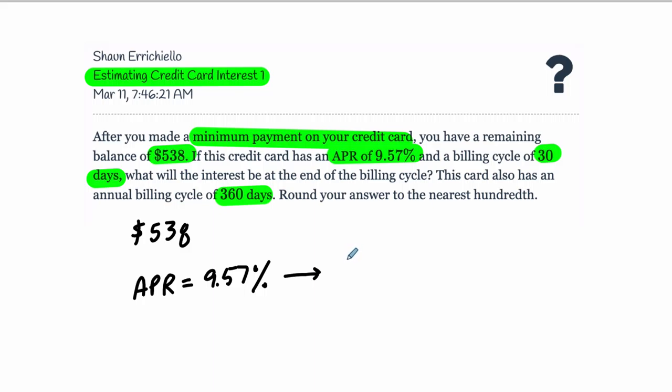So this is 9.57% per year, but we want to divide that number by 100 to turn it into a decimal. So it's 0.0957. This is our yearly APR expressed as a decimal, and we want to know what is that per day. So we take that number, 0.0957, and divide it by the 360 days in their billing year.